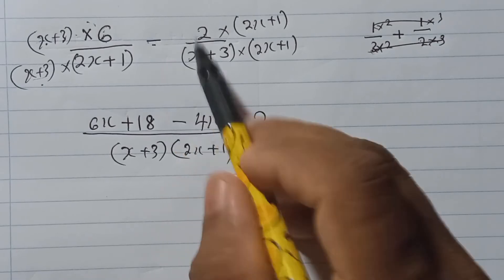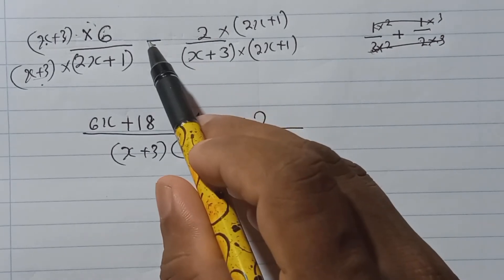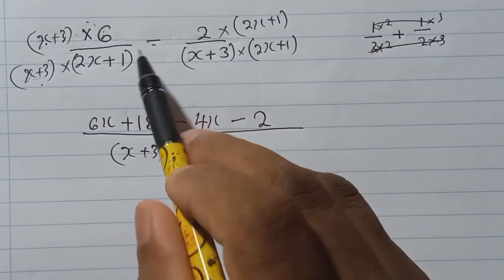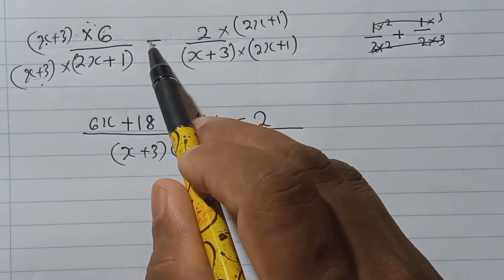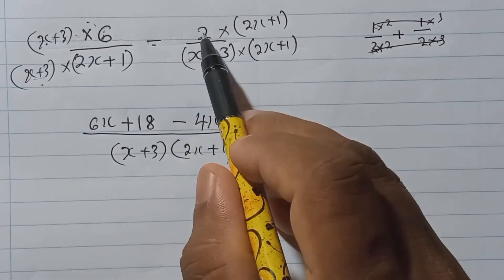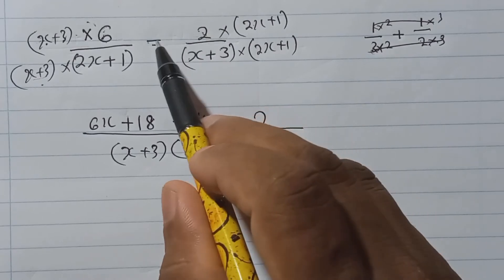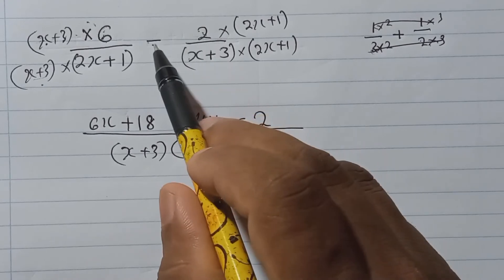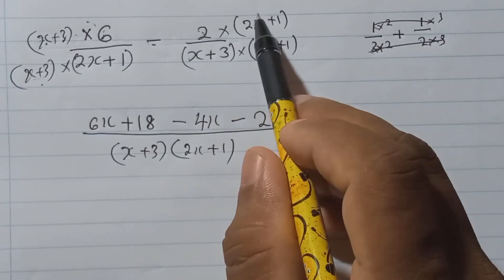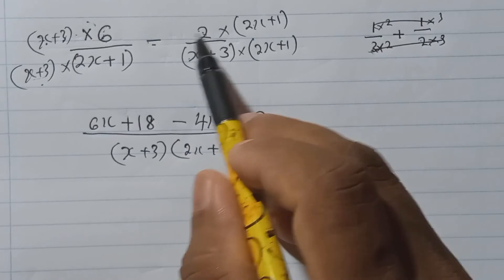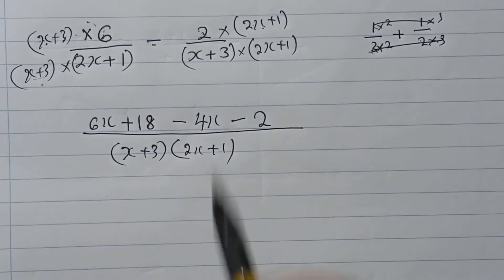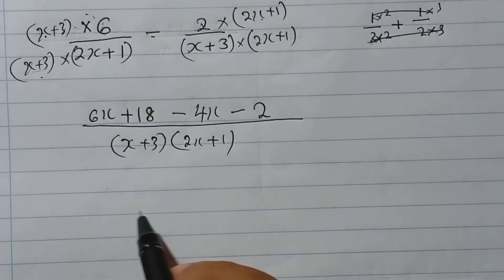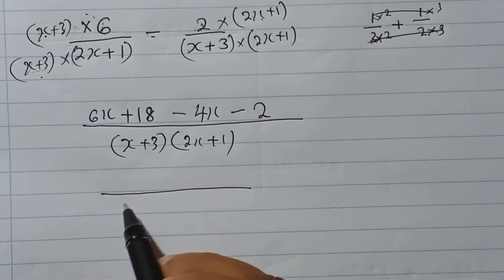When you have a minus sign between two fractions — very carefully — this minus sign belongs to this number. Whatever number you have, the minus sign belongs to it. Think of it this way: this sign belongs to this term, and with that sign you multiply everything in the numerator. Here I multiply by minus 2. If there was a 5 there, it would be minus 5 into this.